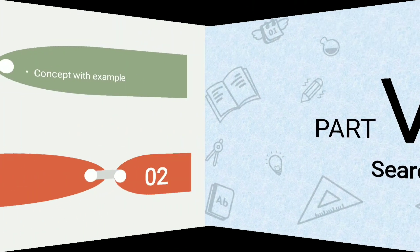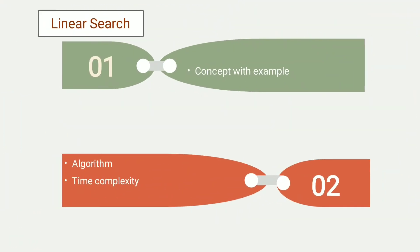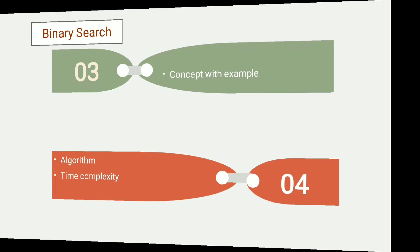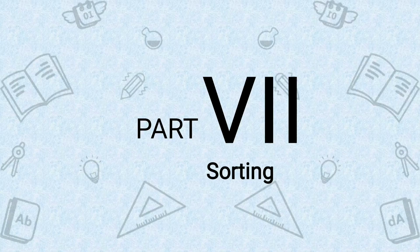We will see applications of queue in the eleventh video. In part six of data structure I will teach what is searching. There are two types of searching — linear search and binary search. In the first and second videos I will teach linear search with example, how linear search works, its algorithm, and time complexity. In the third and fourth videos I will teach binary search with example, its algorithm, and time complexity.